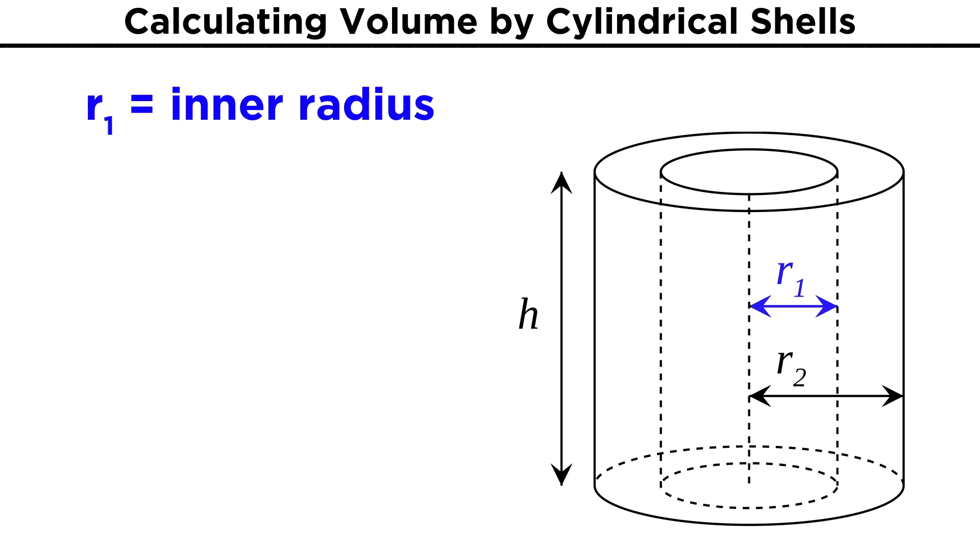This has an inner radius, R1, which ends at the inner face of the solid, and an outer radius, R2, which ends at the outer face. This cylinder also has a height, h.